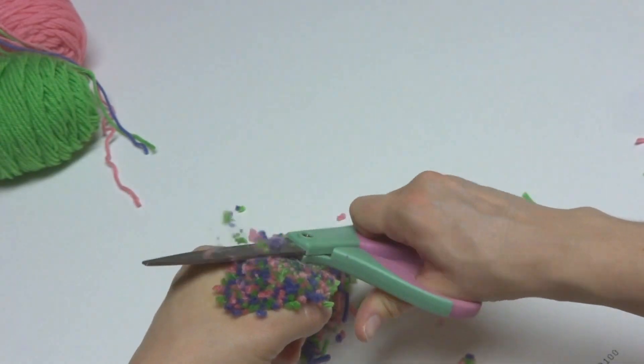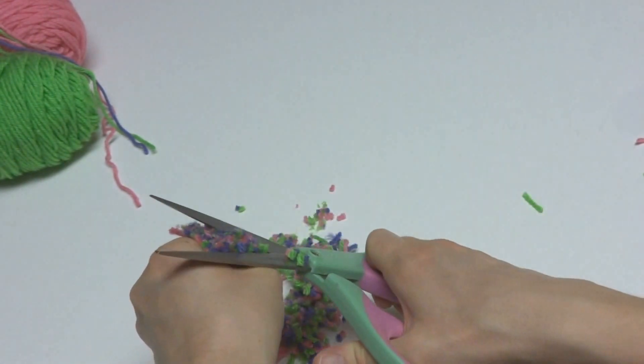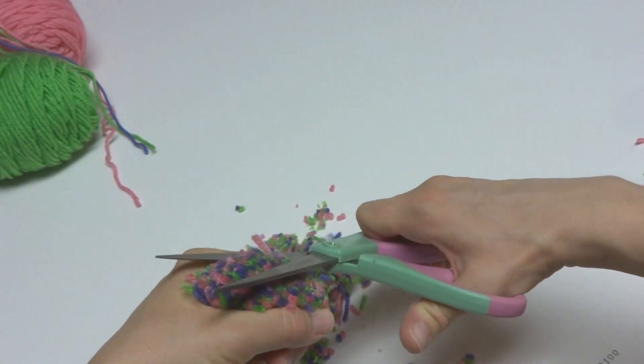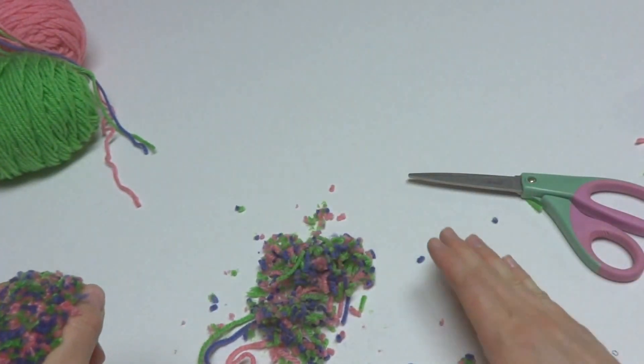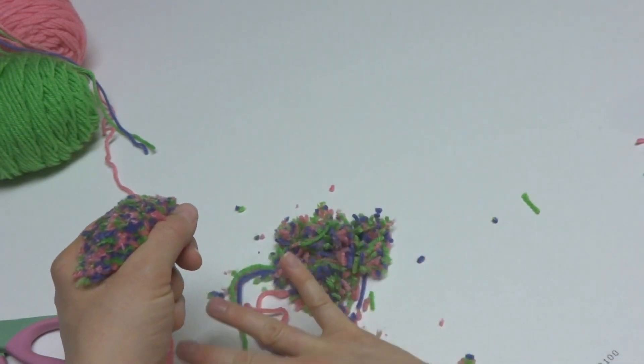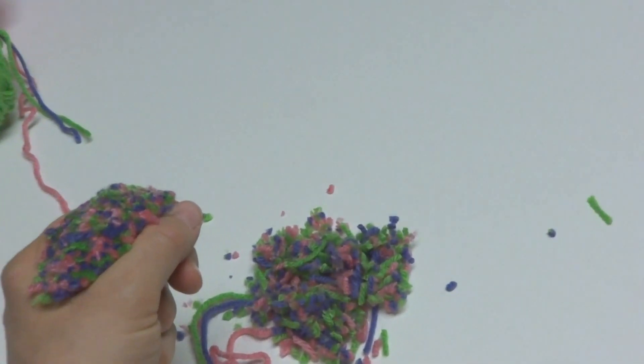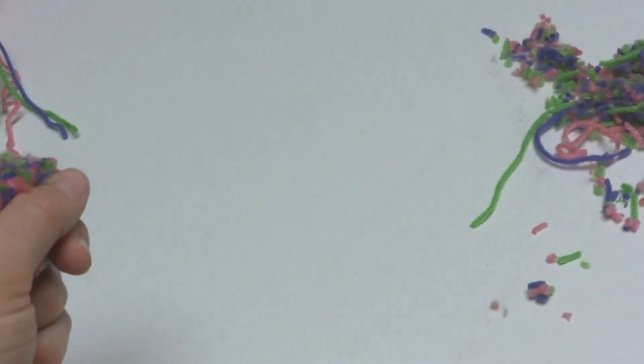So just get it pretty even, even as you can. I'm just cutting mine flush with my hand to start. And you can see these clippings, the birds like them to make their nest, or you can use them as stuffing for a pillow or a stuffed animal or something like that.